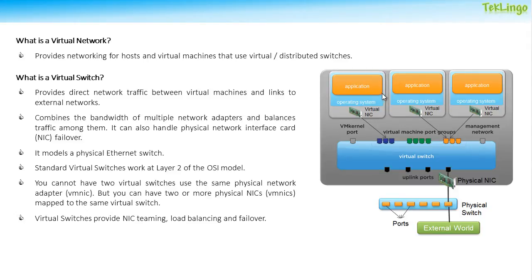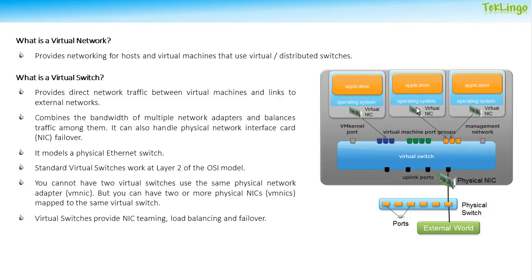If a virtual machine wants to communicate with a machine on the physical switch or out on the internet, the communication starts from the virtual NIC of the virtual machine, passes through the virtual switch, then through the physical NIC of the ESXi host, and then through the physical network using switches and routers. If a virtual machine wants to communicate with another virtual machine on the same switch, the traffic goes from virtual NIC A to the virtual switch and then to virtual NIC B, staying entirely on the virtual network without reaching the physical switch.